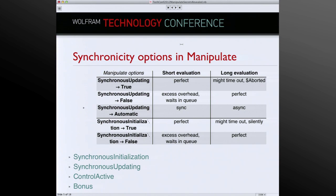So how do these options in the primitives layer — Dynamic and DynamicModule — map to Manipulate? Manipulate also takes SynchronousUpdating and SynchronousInitialization. The SynchronousUpdating setting is passed to the Dynamic implicitly wrapped around the first argument to Manipulate when its boxes are built, and SynchronousInitialization is passed to the DynamicModule used to store the values. If you have a fast-running evaluation, SynchronousUpdating -> True is probably what you want; if the content area takes a while, you might want SynchronousUpdating -> False. The automatic case will be discussed shortly.